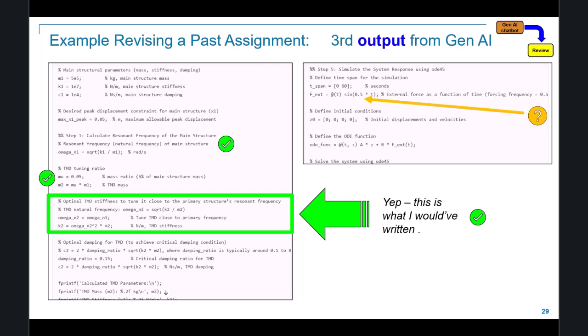And as I sort of skimmed further down the code, something else stood out. The definition of the excitation force that we're going to be stimulating this skyscraper with has some random excitation frequency. It shouldn't be that. It should be at a frequency that corresponds to the primary structure's resonance.